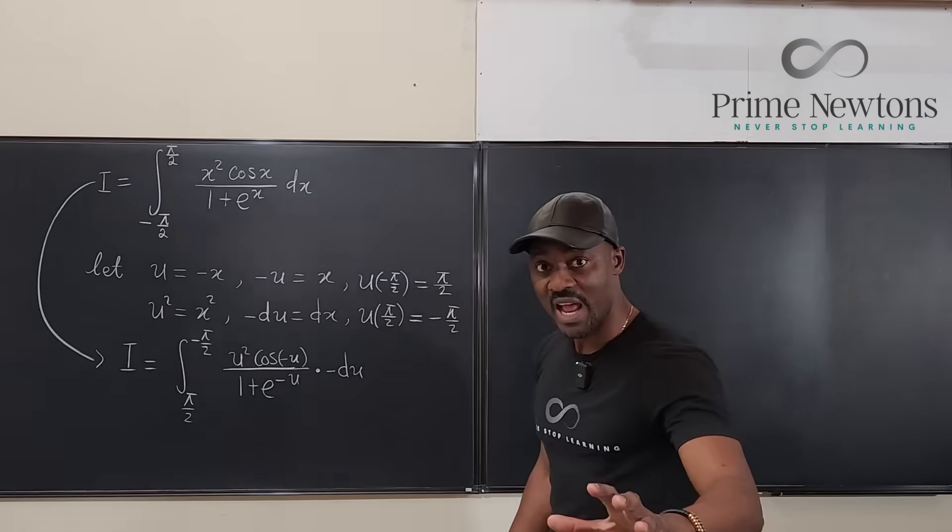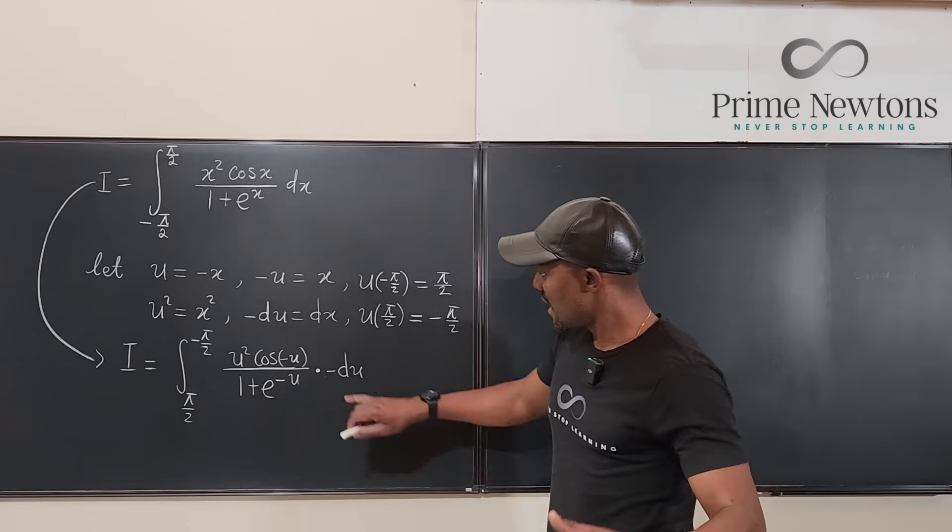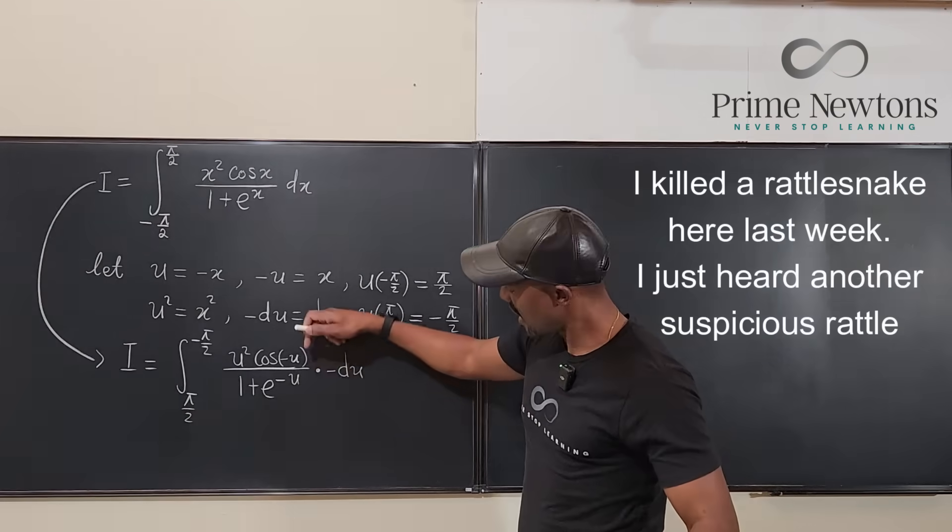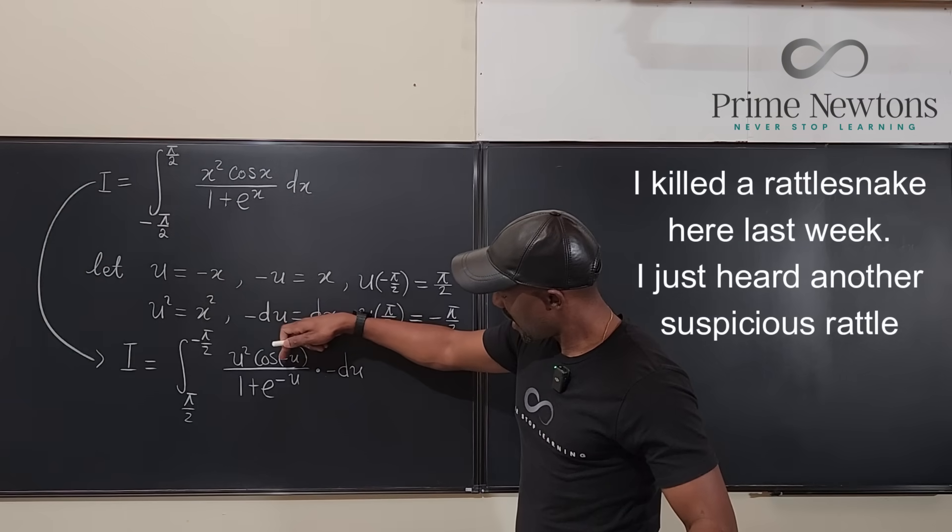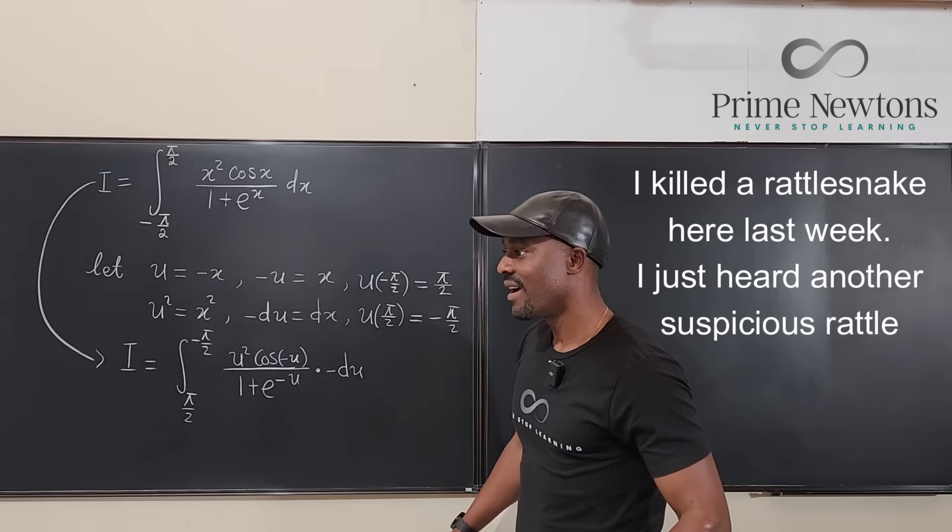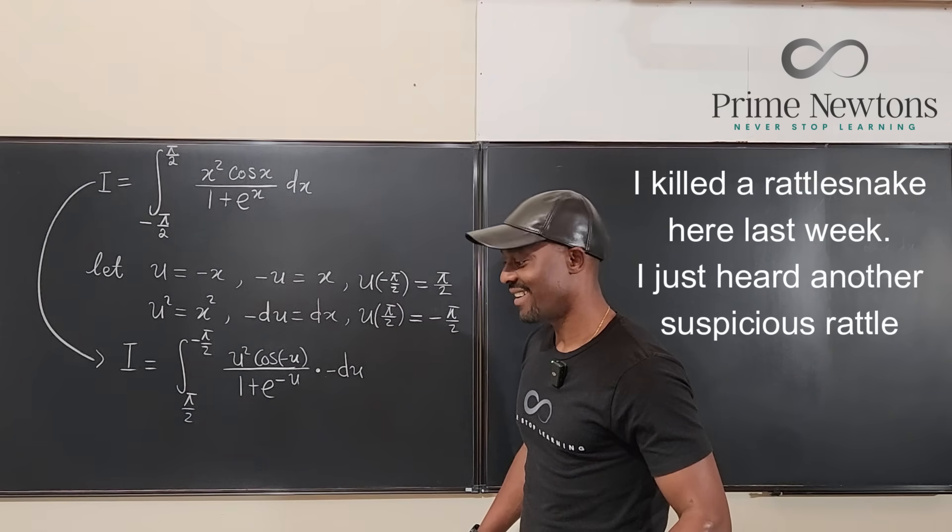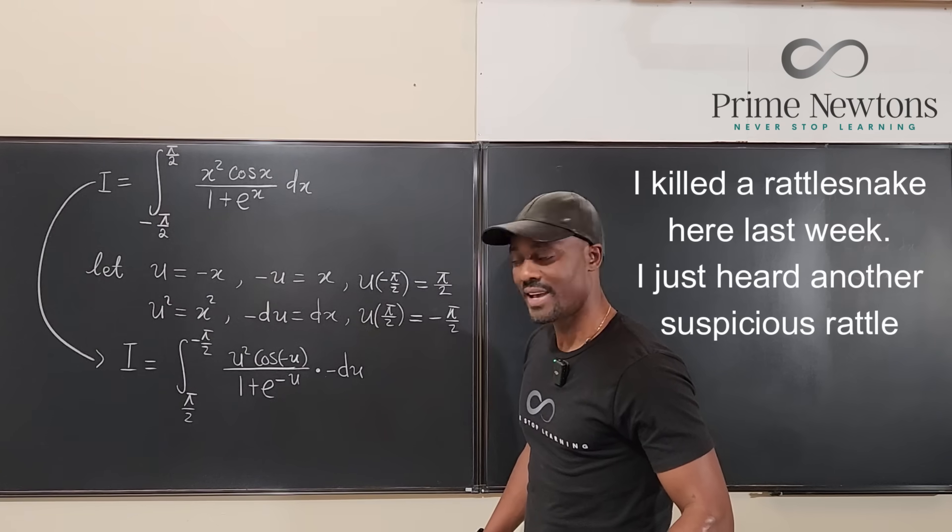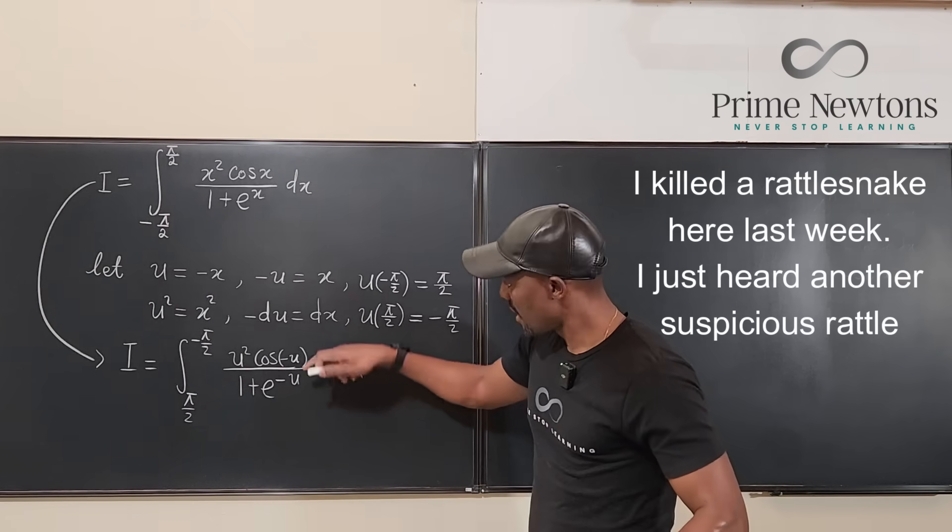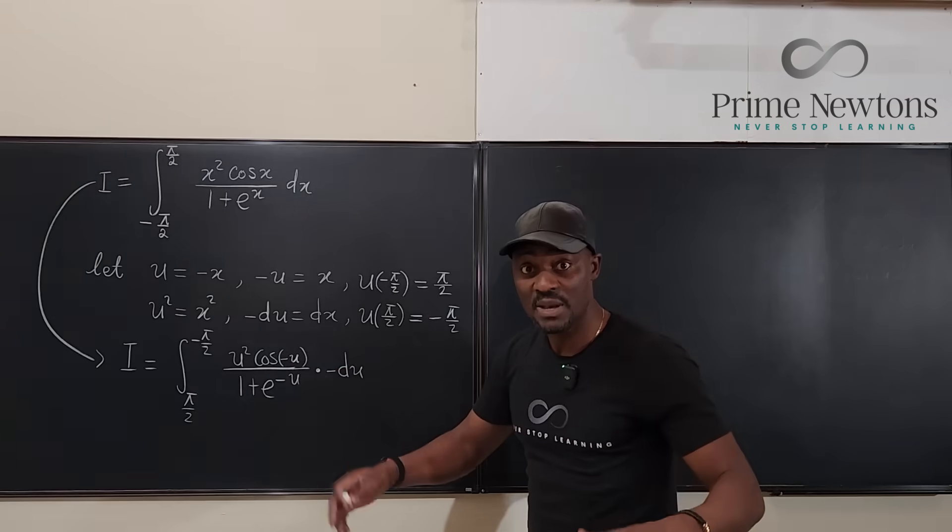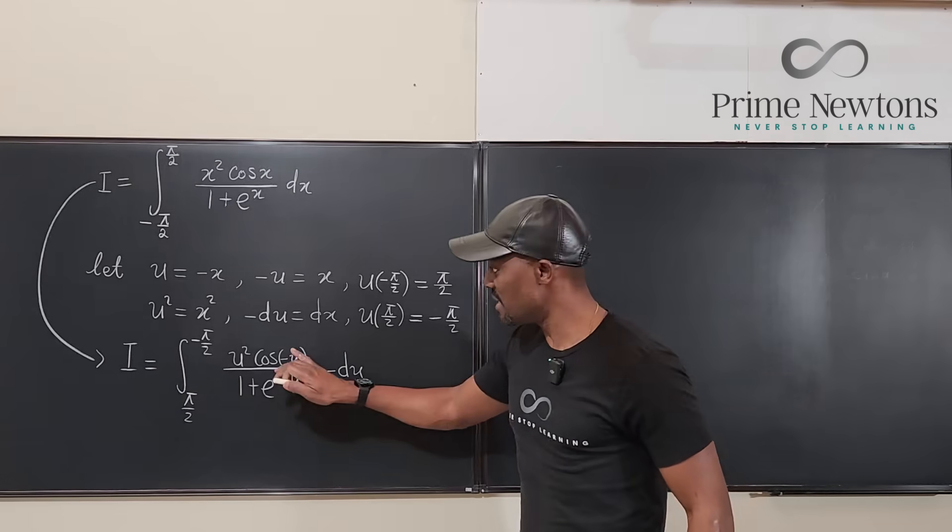Now see what's going to happen. I know that cosine is an even function. That means that cosine negative u is the same as cosine u.